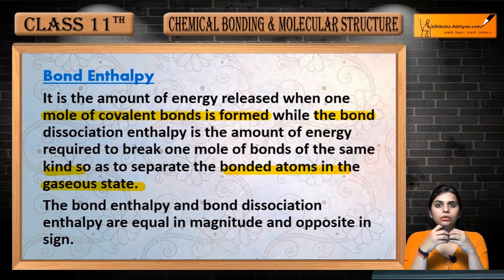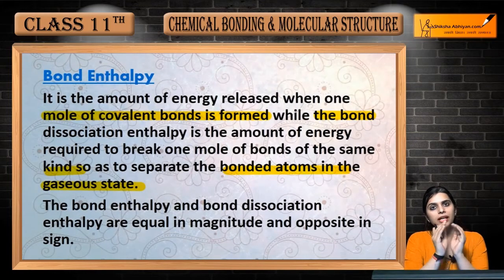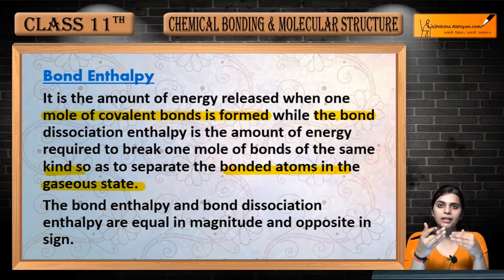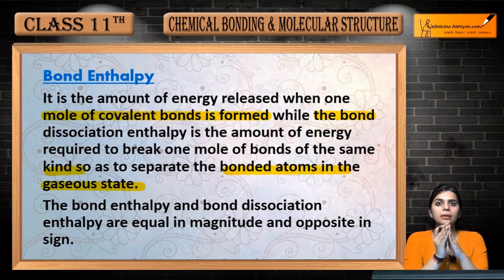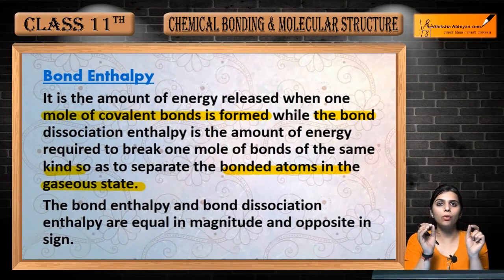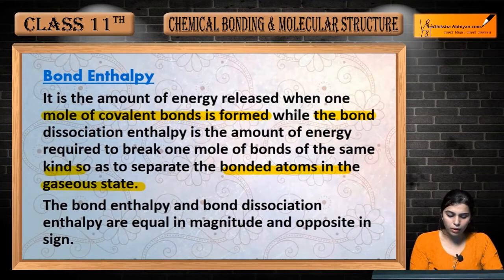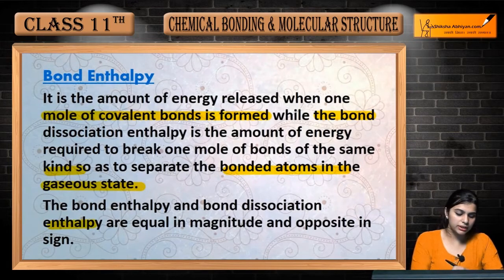Jaise humara agar Cl2 hai — jab Cl2 bana, jab woh combine hua toh kuch energy release hui. Ab woh humara Cl2 ban gaya, ab hume Cl2 se woh Cl-Cl alag-alag atoms chahiye, toh hum kuch energy supply karenge taaki humara woh bond break ho jaye. Use kya bolenge? Bond dissociation energy ya enthalpy.